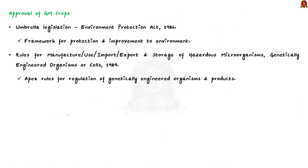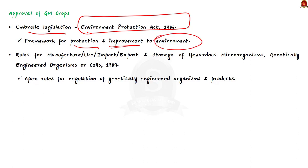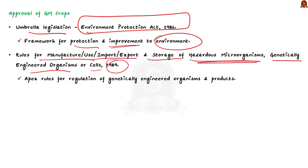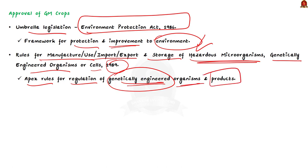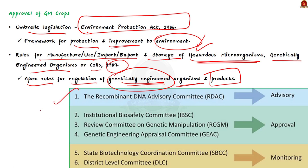In India, the Environment Protection Act 1986 is an umbrella legislation which provides a holistic framework for the protection and improvement of the environment. Rules for the manufacture, use, import, export, and storage of hazardous microorganisms, genetically engineered organisms or cells 1989 have been notified under this Environmental Protection Act 1986. These rules are the apex rules for the regulation of all activities related to genetically engineered organisms and products. Six competent authorities have been notified under the rules — please go through the listed authorities.